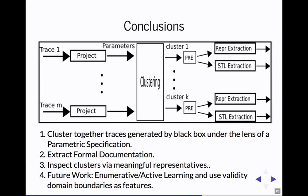In conclusion, for each trace, we project down to the parameter space. We cluster, we get representatives and a specification. And then for future work, we're hoping to remove the need to come up with a specific template or parameterization based off of some very guided enumerative search. And then also using the validity domains themselves, the boundaries of the validity domains themselves as features, to remove the need to come up with a projection.